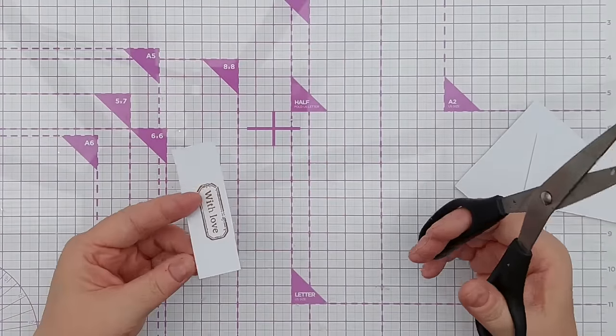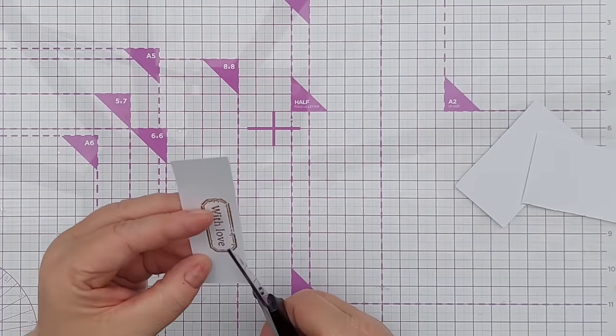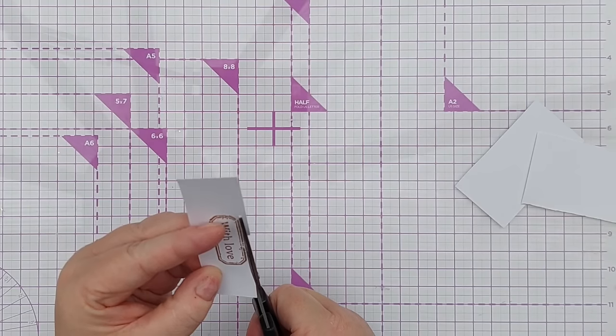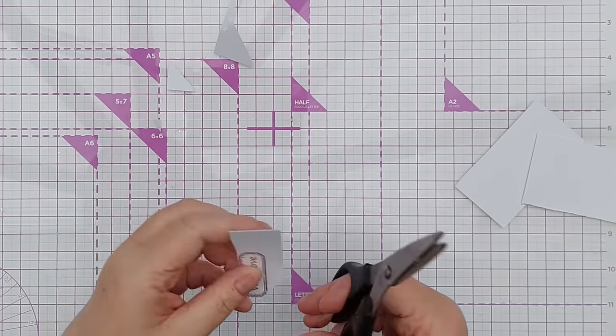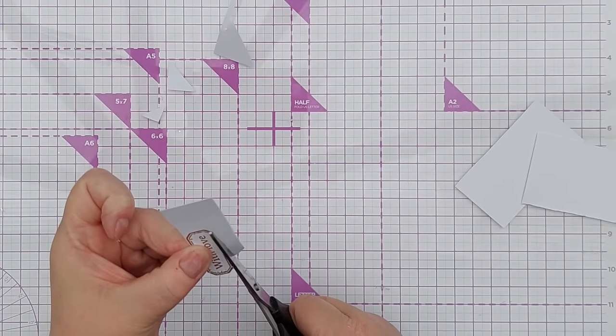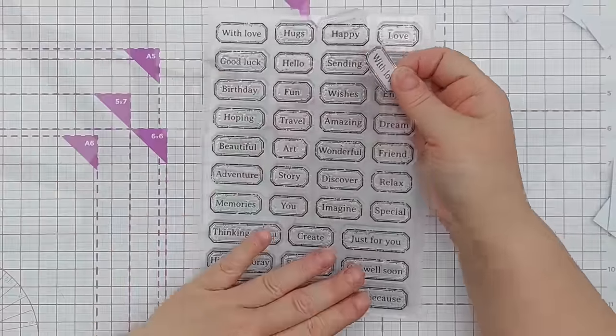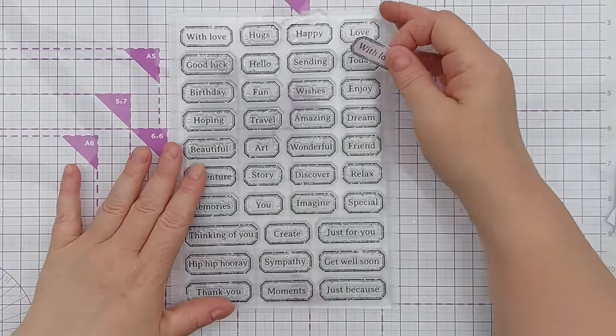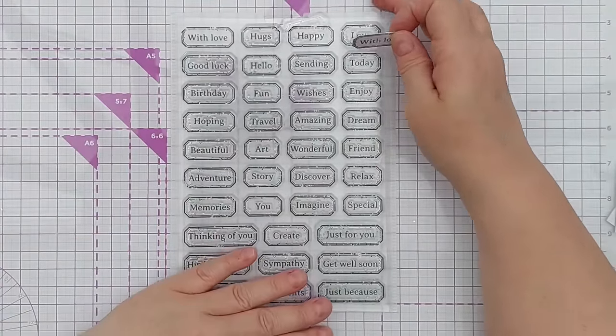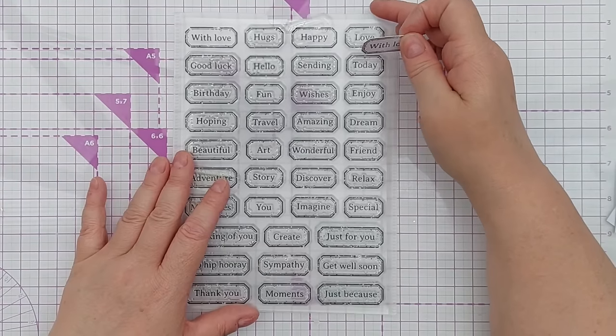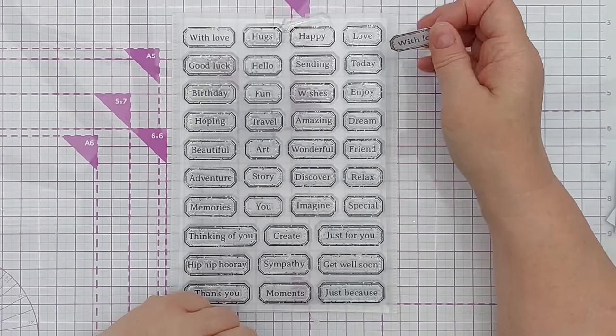And these stamps are really easy to cut out with a pair of scissors because they are mostly straight lines. And these are the kind of stamps that you could stamp out in advance and cut out and have maybe in a little pot or a folder or a pocket on your desk so that when you need a sentiment quickly, you can just grab from these.